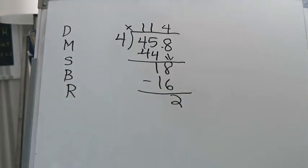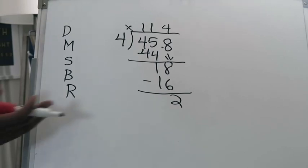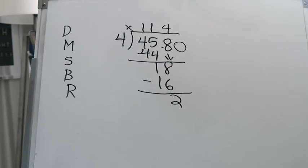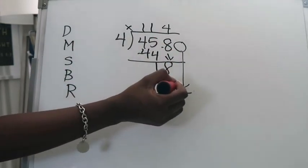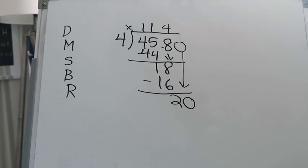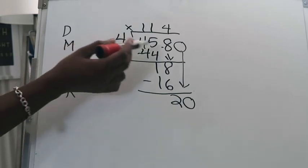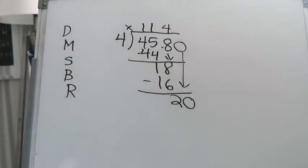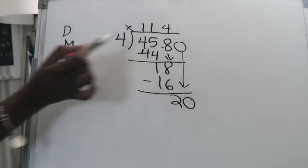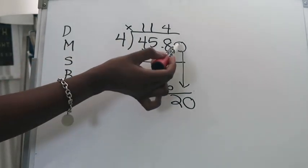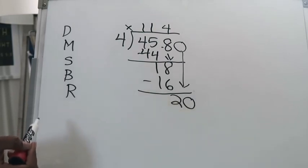4 times 4 is 16 and then 18 minus 16 is 2. So this is where the essential question of today's lesson comes into play. So right now I have a 2 there. I could leave it as a remainder but I could also add a 0 to my dividend and bring it down just so that I can finish out this problem. The reason why I can add a 0 here is because since this is technically a decimal 45 and 8 tenths, me adding a 0 there does not change the value because 45 and 8 tenths is the same thing as 45 and 80 hundredths.